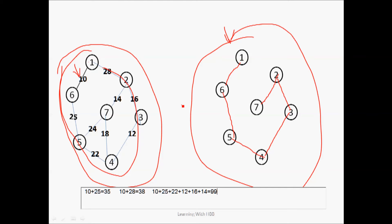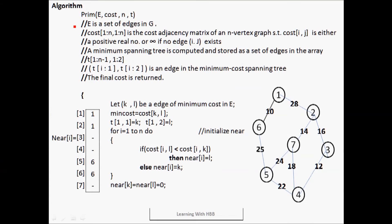Now we have implemented this in the general way; let us go to the algorithm. E is the set of all edges of the undirected graph, and the cost adjacency matrix is already defined. We will construct the minimum spanning tree implemented as a matrix T. First we find the minimum cost edge, which is 10 in this case between vertices 1 and 6, marking them as k and l. We put (k, l) = (1, 6) into the tree matrix T.